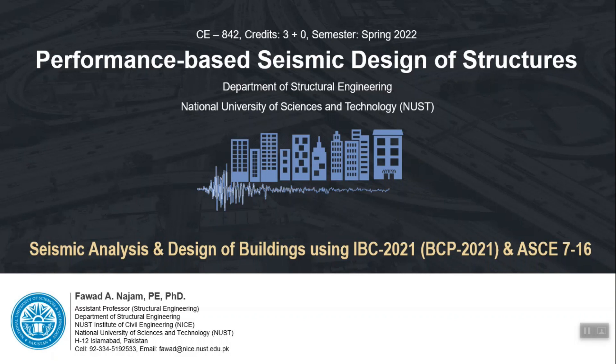If you have site class D or E you may expect some amplification, but if you have site class A — hard rock — you may expect some deamplification. The modifier may be less than one for hard rock; for loose soils the modifier will be greater than one. One way to handle this is to select those modifiers from building codes like IBC or ASCE 7. The other, more accurate way is to perform site-specific analysis, called site response analysis.